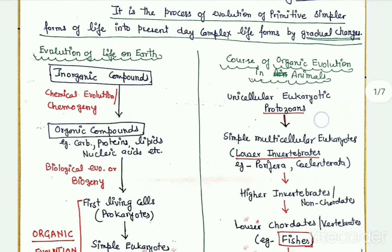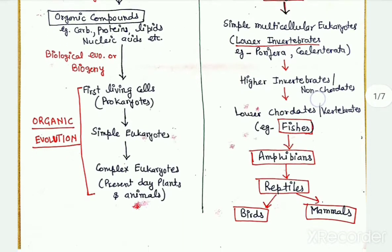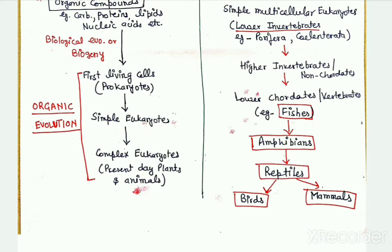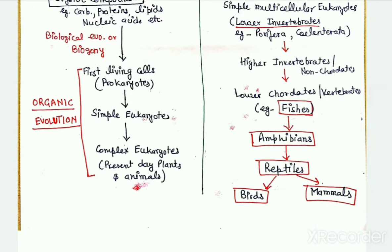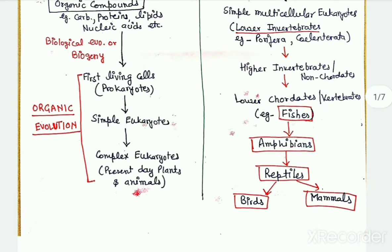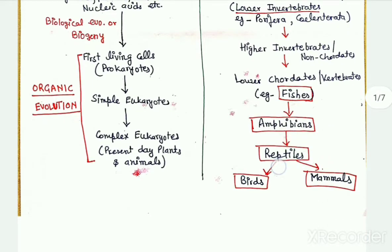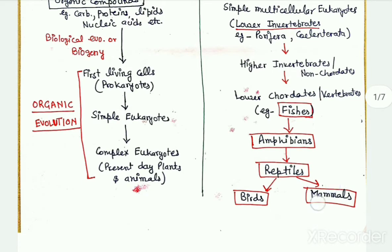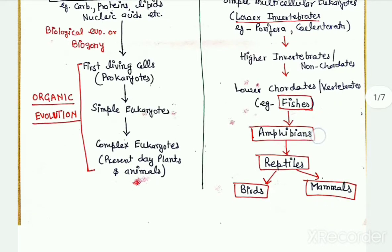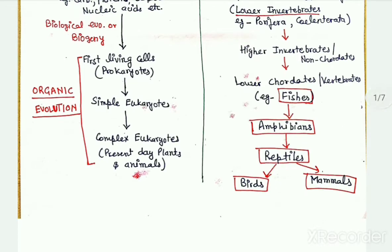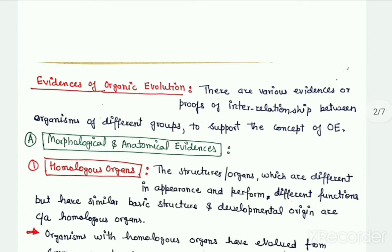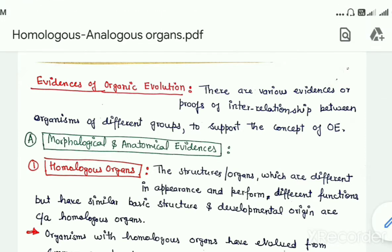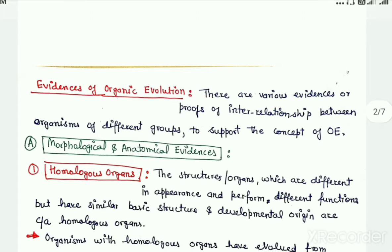Let us see one example of organic evolution. In case of higher animals, fishes were the first to evolve on earth approximately 400 million years ago. It has been proved that from fishes evolved amphibians, from amphibians evolved reptiles, and reptiles then got evolved into birds and mammals. This is what organic evolution is — complex organisms forming from simpler ones. To prove organic evolution, there are many evidences, the first set being on the basis of morphology and anatomy of organisms.